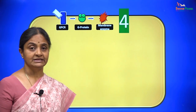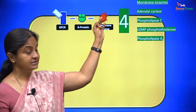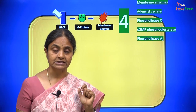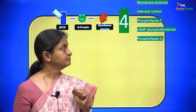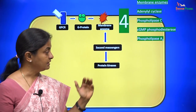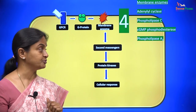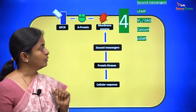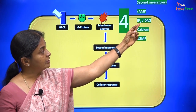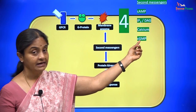The four membrane enzymes we will consider are: adenylyl cyclase, found on the cell membrane; phospholipase C; cGMP phosphodiesterase; and phospholipase A2. The membrane enzyme activates second messengers, which in turn activate serine-threonine kinases within the cell. The four second messengers are: cyclic AMP, inositol triphosphate and diacylglycerol (as a combination), calcium, and cyclic GMP.